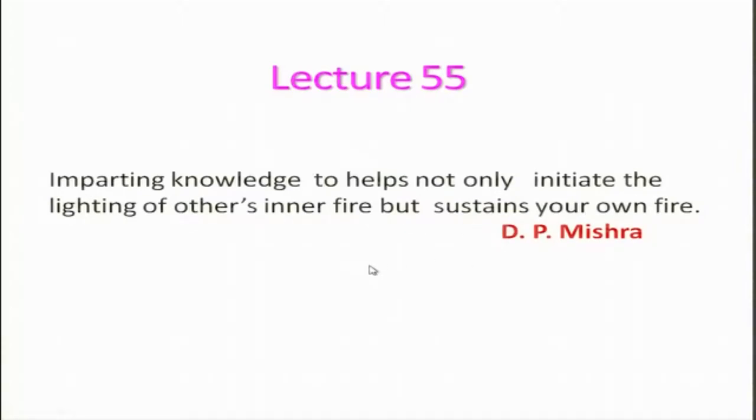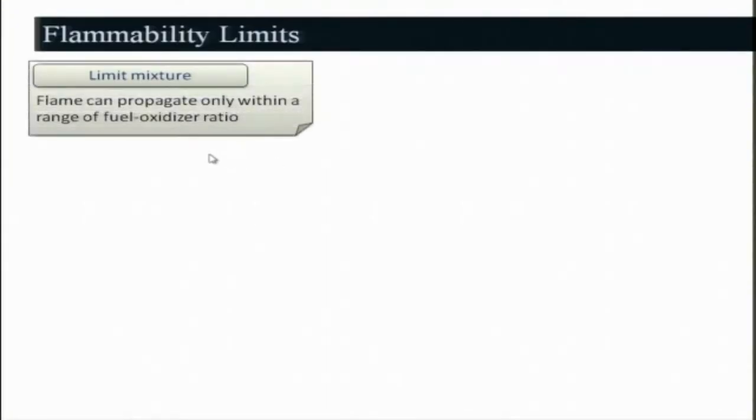In the last lecture we basically looked at quenching diameter and quenching distance, and derived a relationship for quenching diameter, trying to relate it to both the flame thickness and the laminar burning velocity. Today we will be looking at flammability limits — there are limit mixtures beyond which the flame would not propagate, within a certain range of fuel-air ratio.